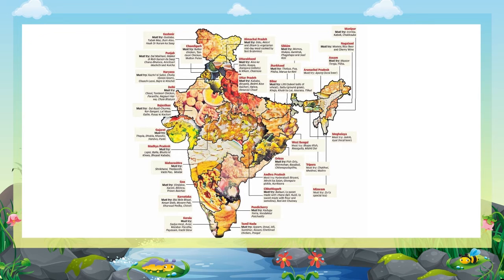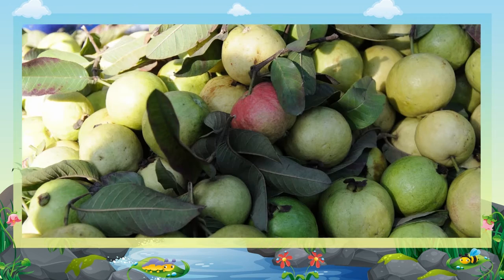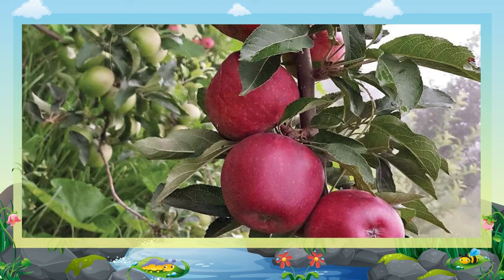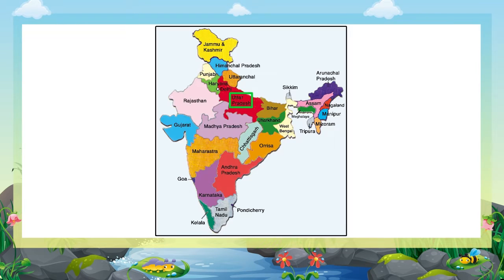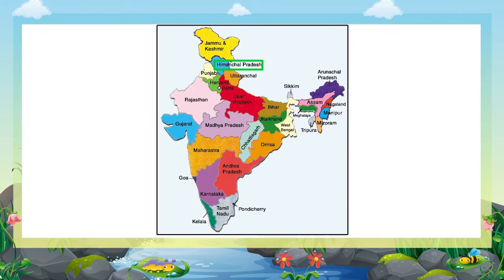Four: Fruits. India is the second largest producer of fruits in the world after Brazil. A variety of fruits are grown in India; banana, mango, papaya, guava, apple, etc. are the chief fruits. Mangoes are grown in Uttar Pradesh, West Bengal, and Bihar. Apples are grown in Himachal Pradesh and Kashmir.